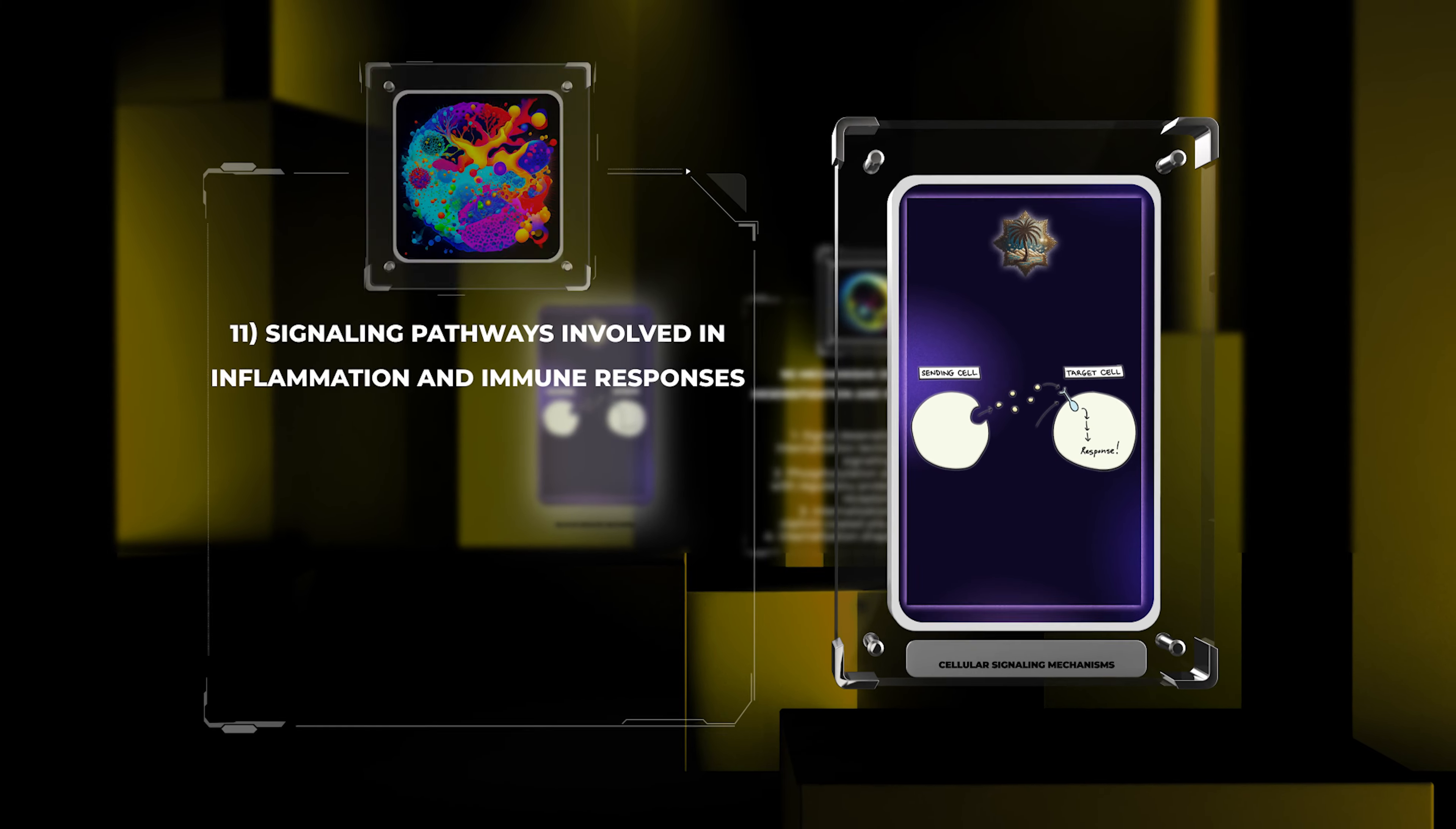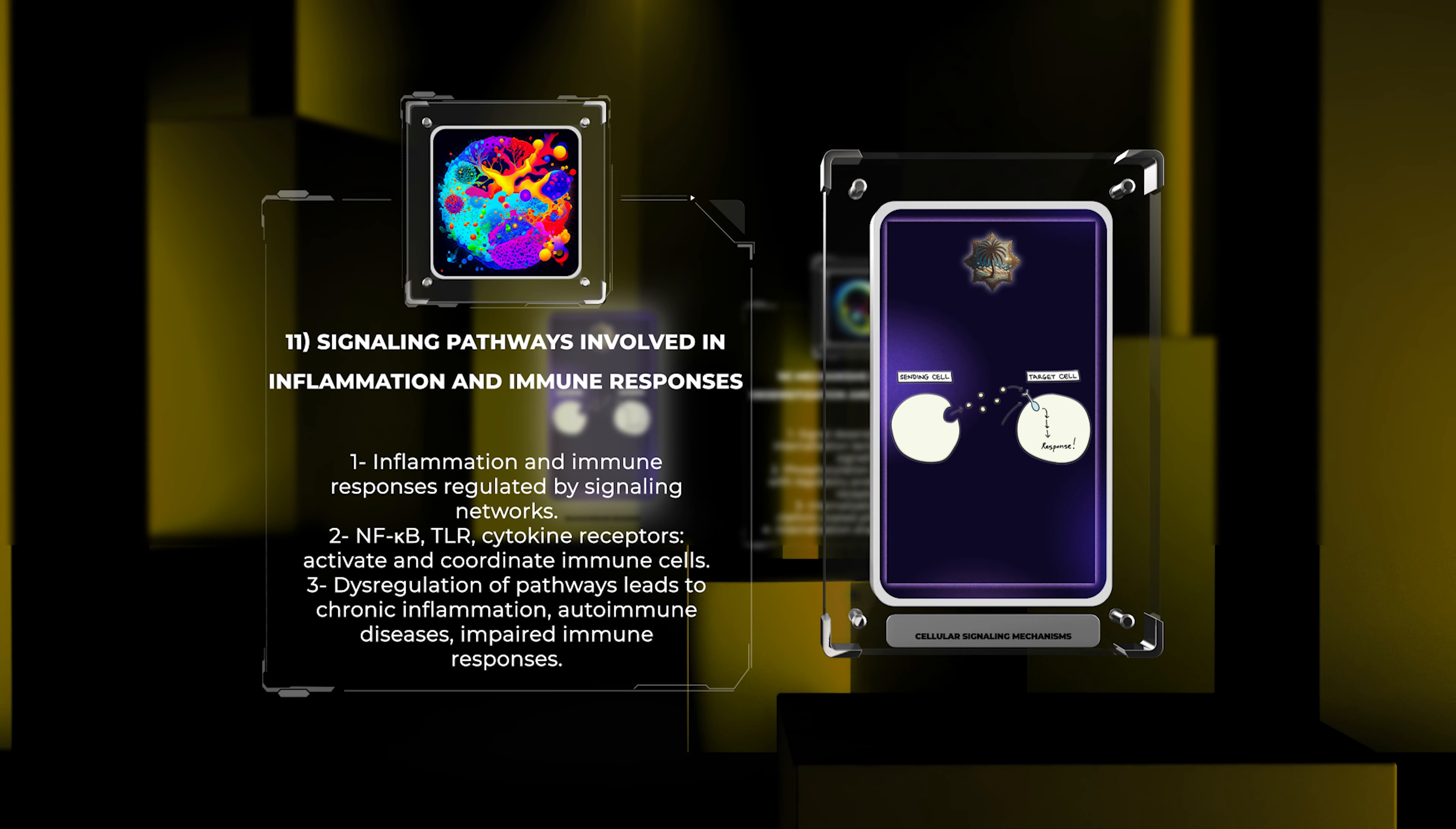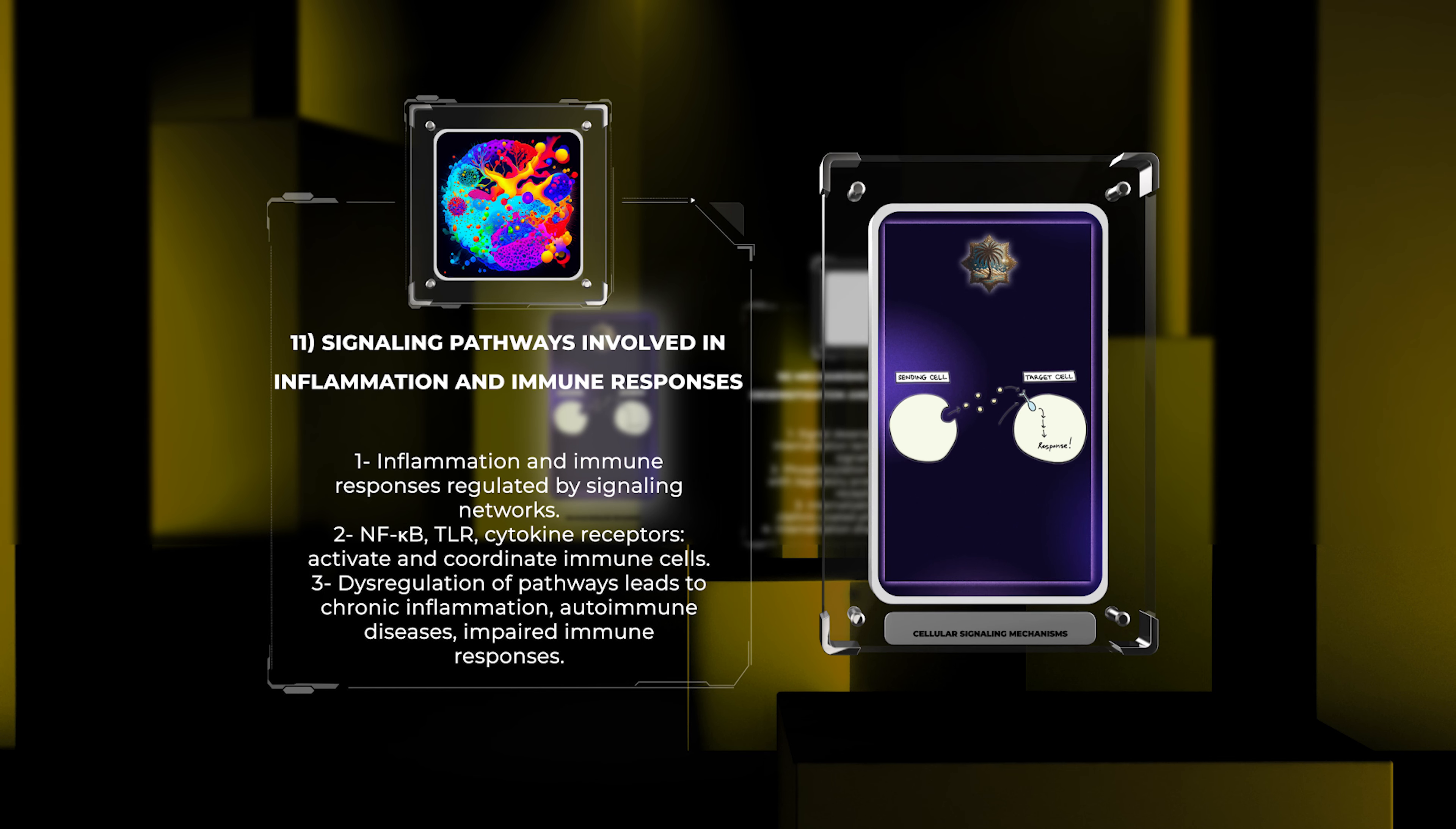Inflammation and immune responses are tightly regulated by intricate signaling networks. Various signaling pathways, such as nuclear factor kappa B (NF-κB), toll-like receptor (TLR), and cytokine receptors, govern the activation and coordination of immune cells, release of inflammatory mediators, and clearance of pathogens. Dysregulation of these pathways can lead to chronic inflammation, autoimmune diseases, and impaired immune responses.